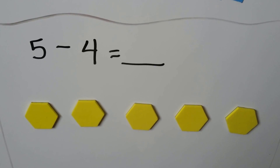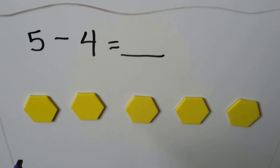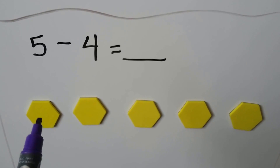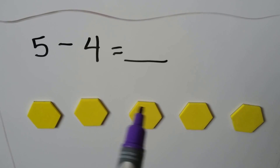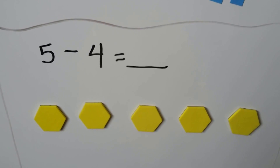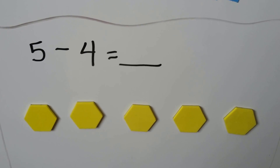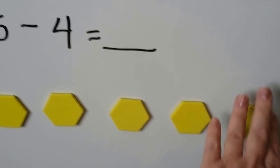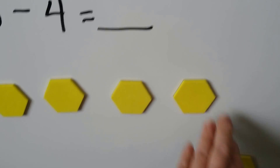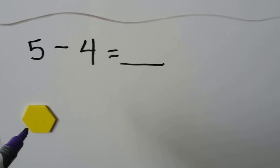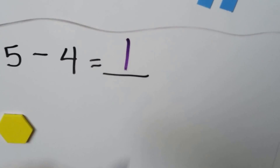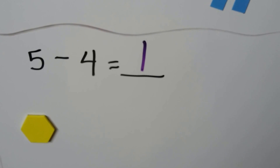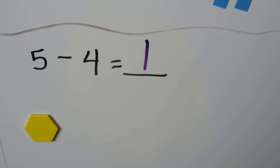Five minus four. We have five yellow hexagons: one, two, three, four, five. We take away four: one, two, three, four. We have one yellow hexagon left. Five minus four is equal to one.